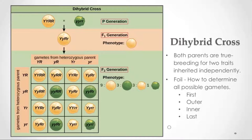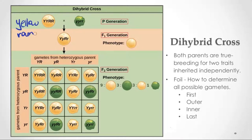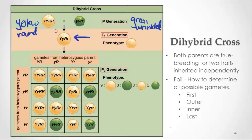We're going to finish up with our last topic: the dihybrid cross. It's similar to the monohybrid cross we looked at earlier, but di means two — so instead of one trait, we're talking about two separate traits combined into one Punnett square. In the P generation, we have true breeding parents that differ for two characteristics. One parent is yellow and round (both dominant phenotypes, homozygous dominant for both), and the other is green and wrinkled (both recessive). The F1 will be heterozygous — getting one dominant and one recessive allele for each trait.